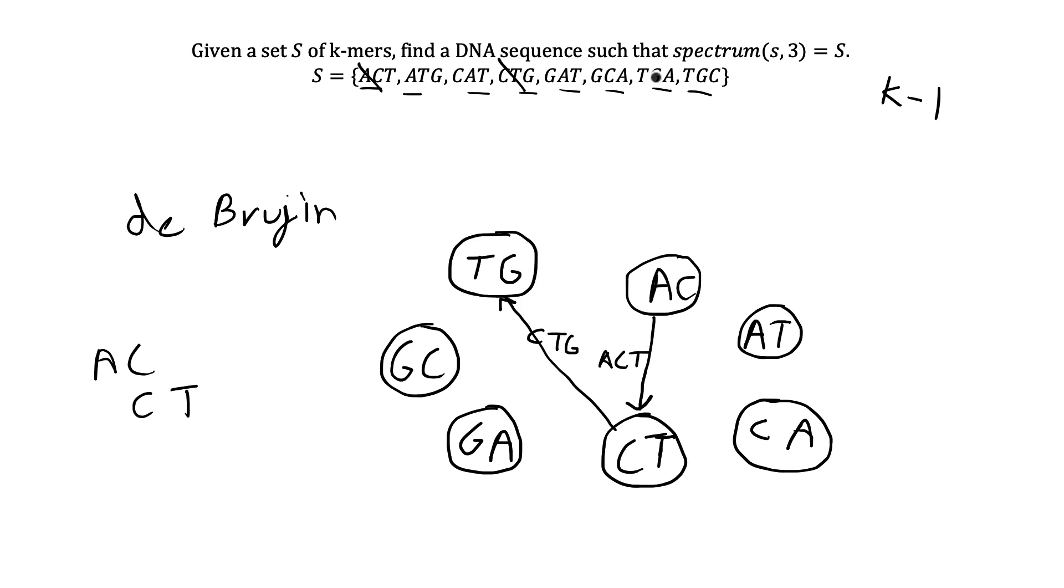From TG, we can go to TGA, which is here. From GA, we can go to the next fragment GAT. So we're going to go from GA to AT. From AT, I'm going to go to TG. From TG, I'm going to go to GC. GC goes to CA and finally CA goes to AT.